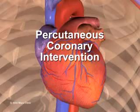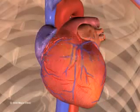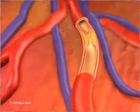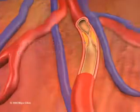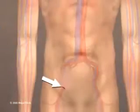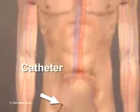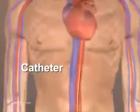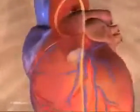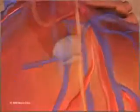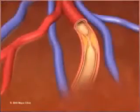Percutaneous coronary intervention, also known as coronary angioplasty, opens narrowed coronary arteries. A small, hollow tube called a catheter is inserted into an artery in the groin or arm and threaded to the affected artery.